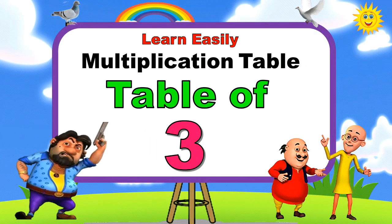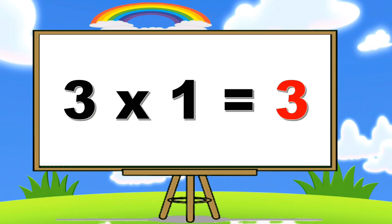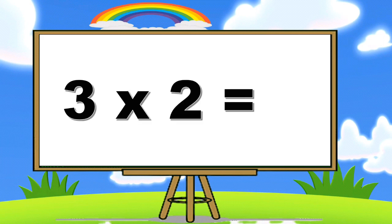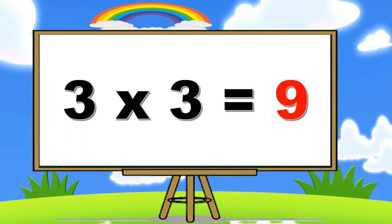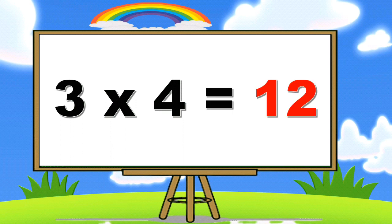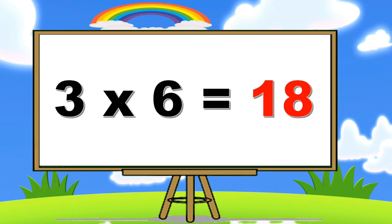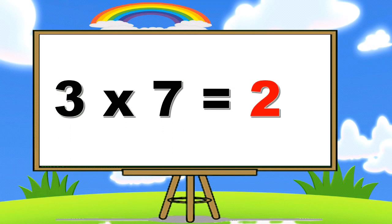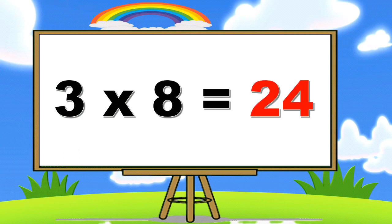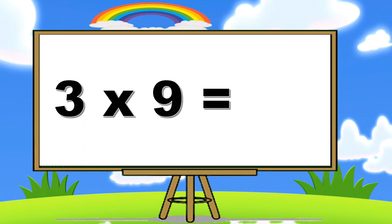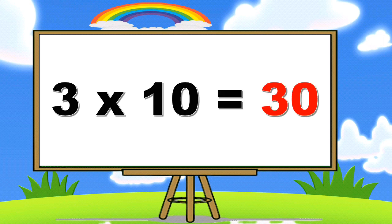Table of three. Three ones are three, three twos are six, three threes are nine, three fours are twelve, three fives are fifteen, three sixes are eighteen, three sevens are twenty-one, three eights are twenty-four, three nines are twenty-seven, three tens are thirty.